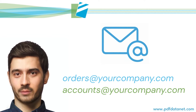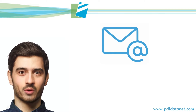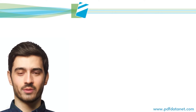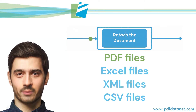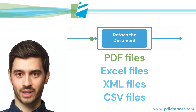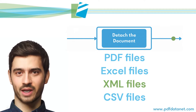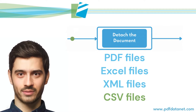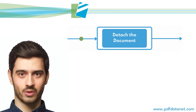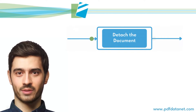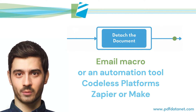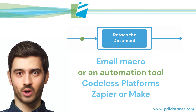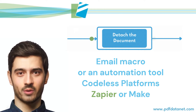Any email arriving in this mailbox will trigger the workflow. The documents attached to the emails can be PDFs, Excel, XML, or CSV files. To automatically detach the document, we use an email macro or business process app, such as Codeless Platforms, Zapier, or Make.